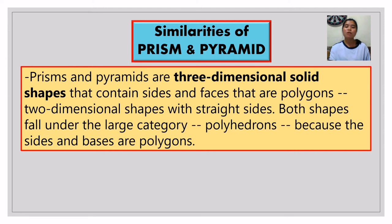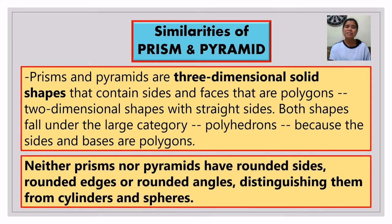Both shapes fall under the large category of polyhedrons because the sides and bases are polygons. Neither prisms nor pyramids have rounded shapes, rounded sides, rounded edges, or rounded angles — distinguishing them from cylinders and spheres.